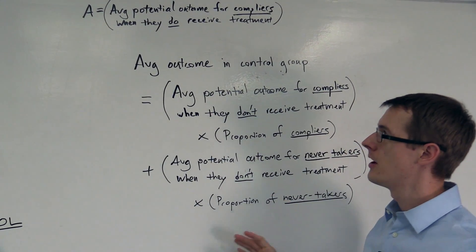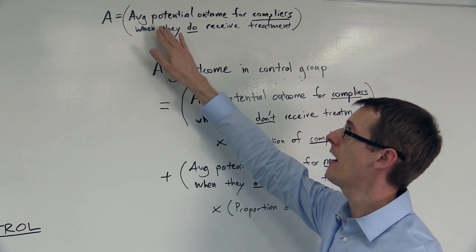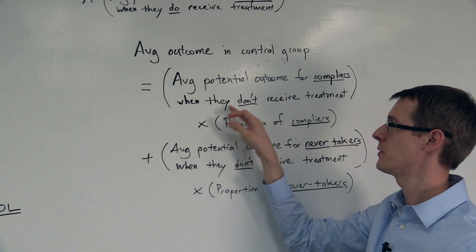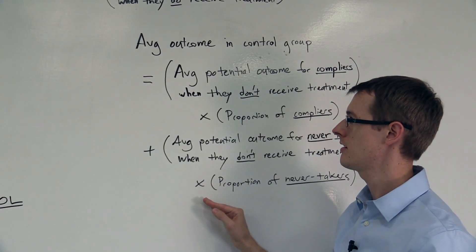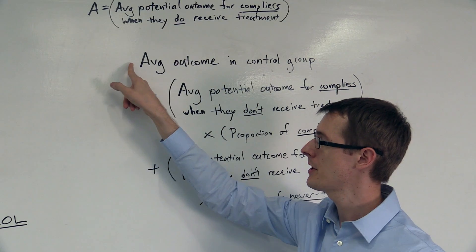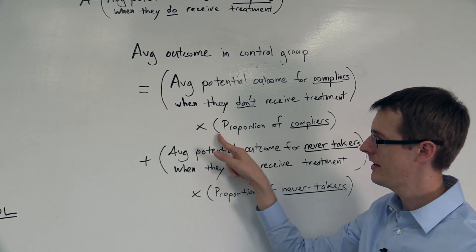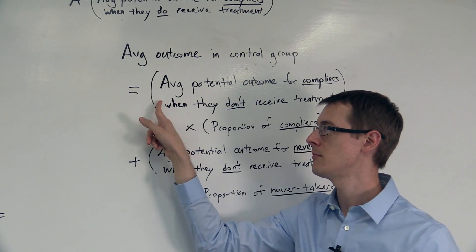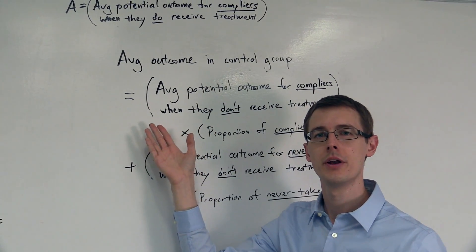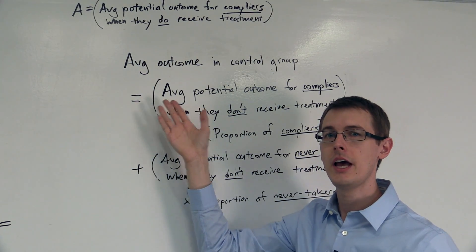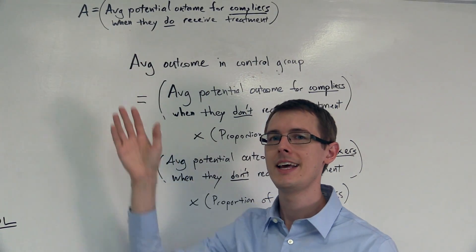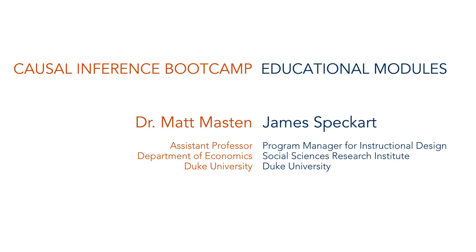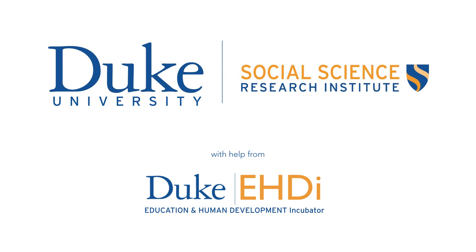So remember, the local average treatment effect is the average outcome for compliers when they do receive treatment, minus the average potential outcome for compliers when they don't receive treatment. In this equation, the left-hand side is known from our data, the proportion of compliers is known, the never-taker outcome is known — only the average potential outcome for compliers when untreated is unknown. But now we just have one equation and one unknown, and we can solve for it. We solve the equation, get that number, subtract it from the other, and that gives us the local average treatment effect.